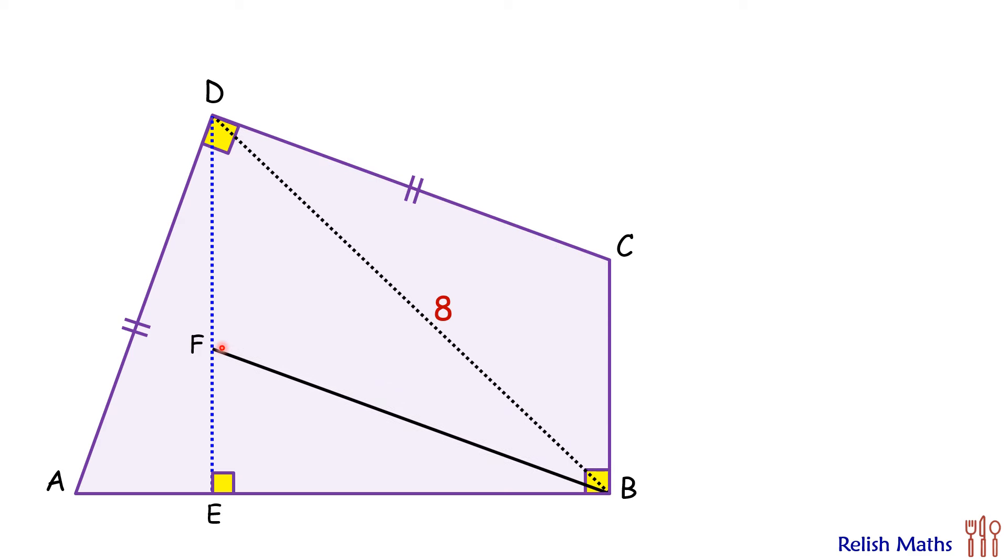So basically BF is parallel to CD, and if we'll see this 90 and this 90, these are co-interior angles. So sum is 180, thus we can say that FD and BC are parallel, or we can say BCDF is a parallelogram and thus opposite sides are also equal. So we can say BF and CD are also equal to each other. Next let's see the angles.